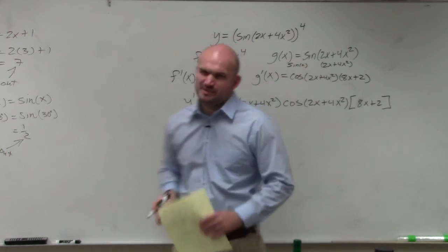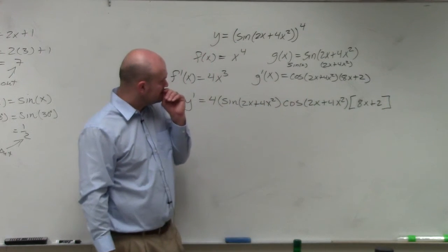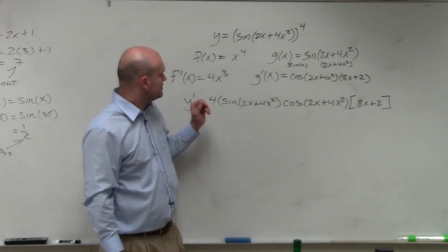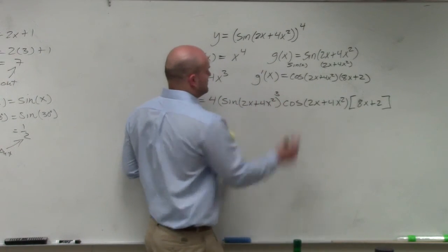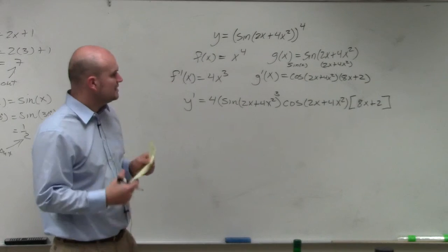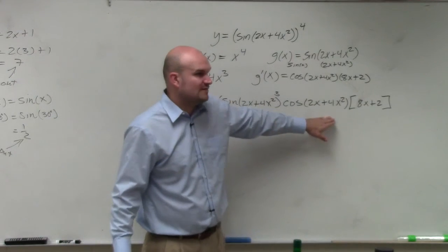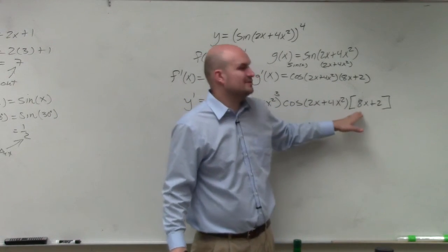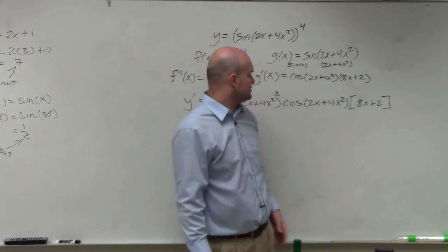I'll just use a bracket just to make sure. That's to the third power. I left that off. Just note that this is cosine of that times 8x plus 2. That's why I used brackets to make sure I differentiated that.